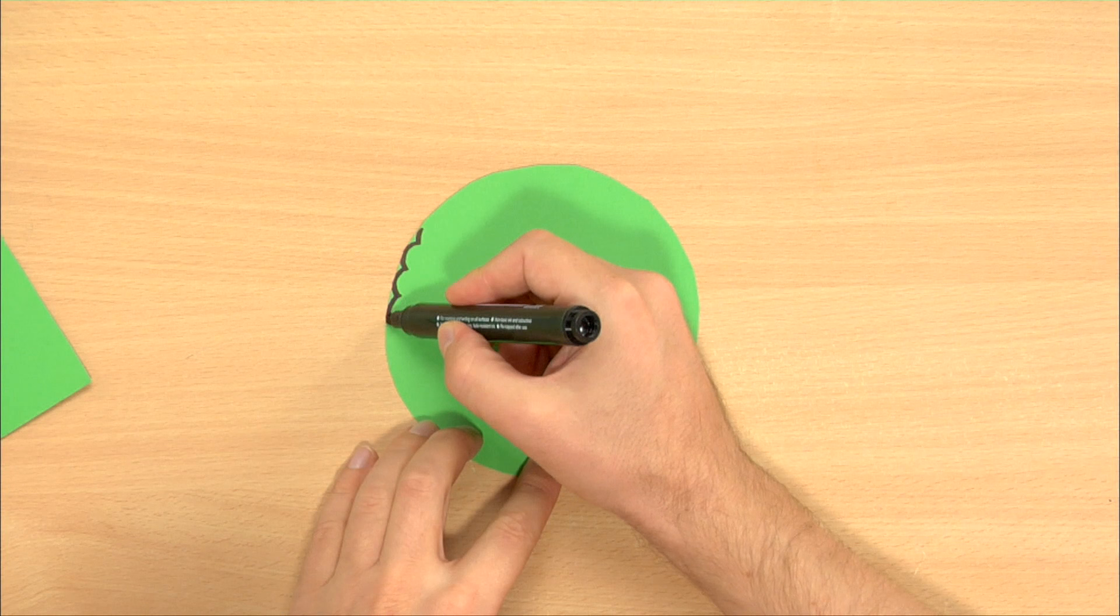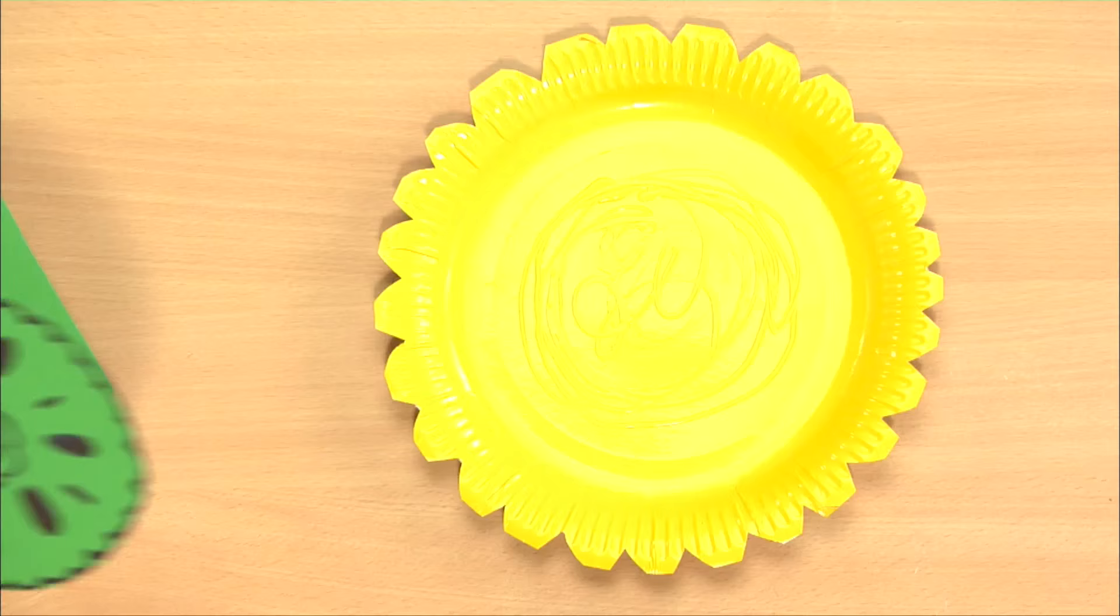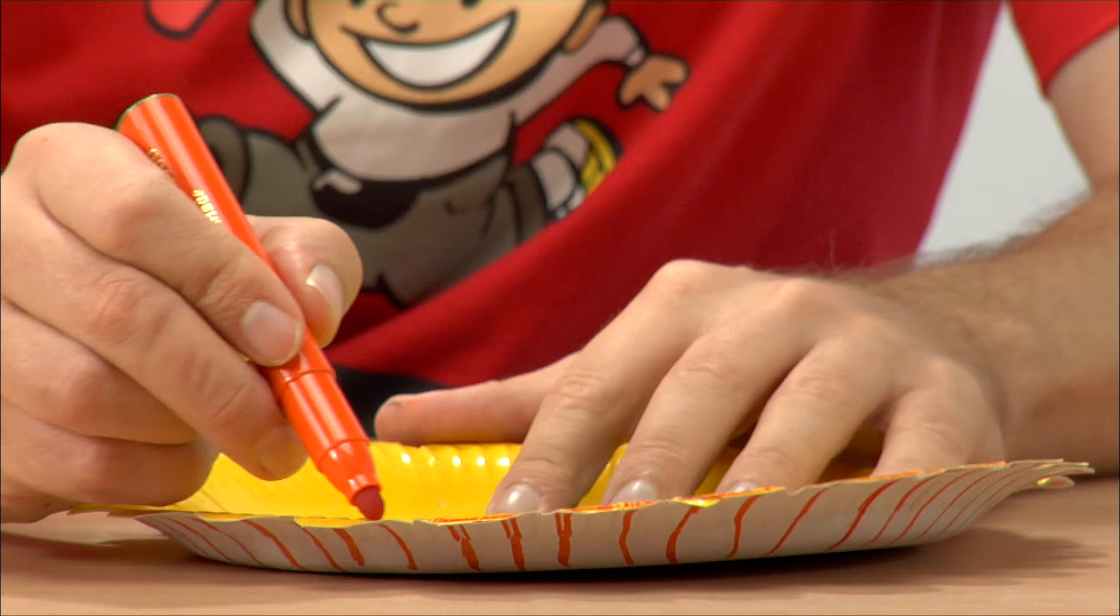Then, I decorate it with a black border and a fancy symmetrical design. Then, I glue it on. Next step, I use a marker to decorate the outer border of the plate.